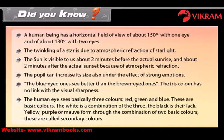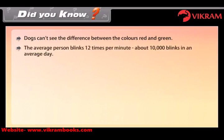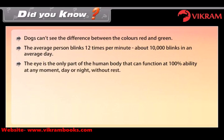White is a combination of the three basic colors; black is their lack. Yellow, purple, and mauve form through the combination of two basic colors — these are called secondary colors. Dogs can't see the difference between the colors red and green. The average person blinks 12 times per minute, about 10,000 blinks in an average day. The eye is the only part of the human body that can function at 100% ability at any moment, day or night, without rest.